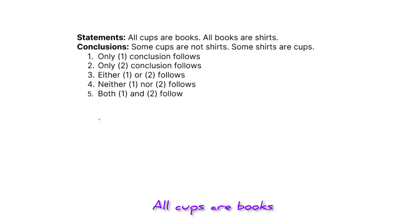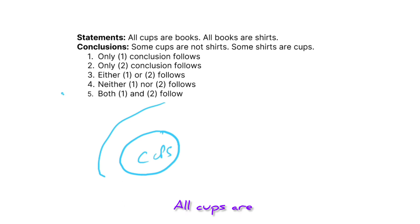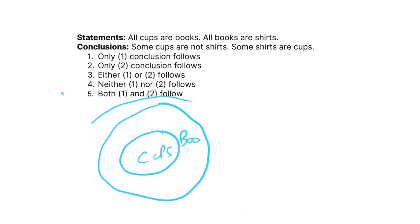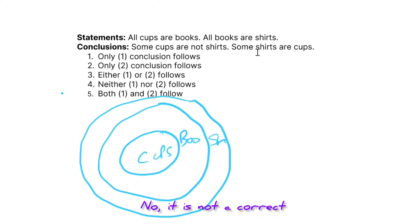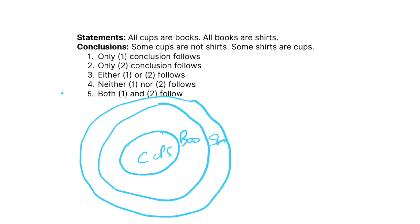Next question: all cups are books, and all books are sheds. Conclusions: some cups are not sheds — no, that is not correct since all cups are inside sheds. Some sheds are cups — yes, that is correct. So only two follows.